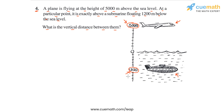To do that, let us represent vertical positions above the sea level using positive integers, and vertical positions below the sea level using negative integers.